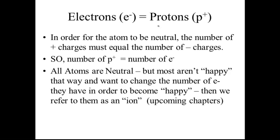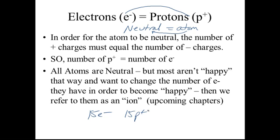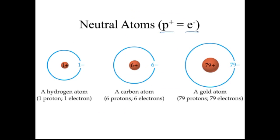Electrons equal protons in a neutral atom. We always assume the word 'atom' means neutral, so the number of electrons equals the number of protons. If we have 15 electrons, we have 15 protons. That means they're neutral — though a lot of atoms don't like it that way, so they're going to change the number of electrons. Protons always have to stay the same unless you have a nuclear reaction. You got one proton, you have one electron. You got six, you have six. You got 79, you have 79. They have to be equal.